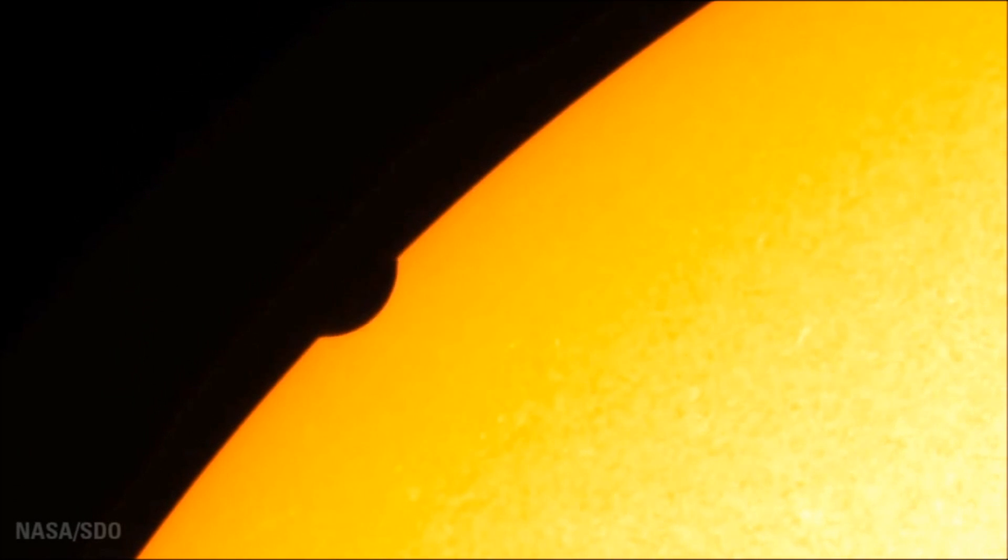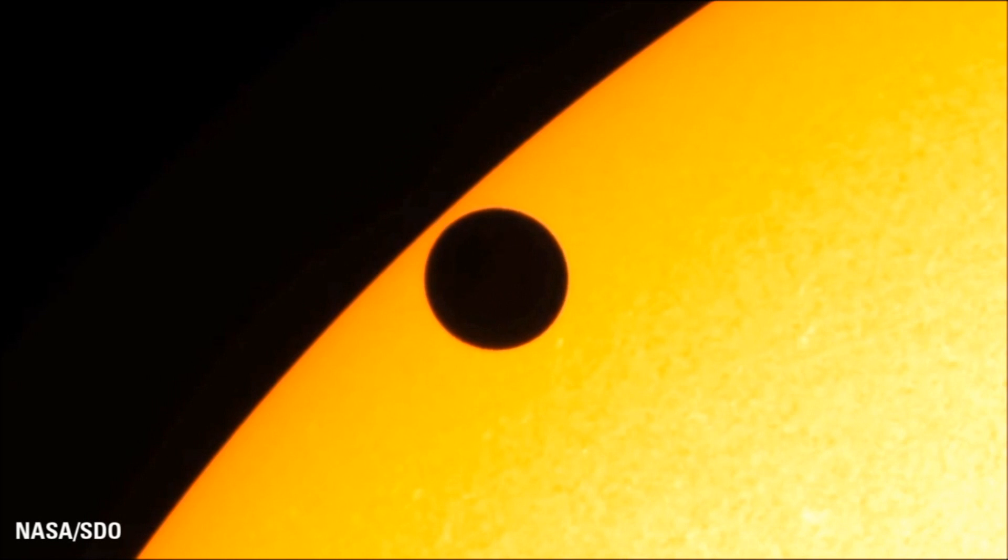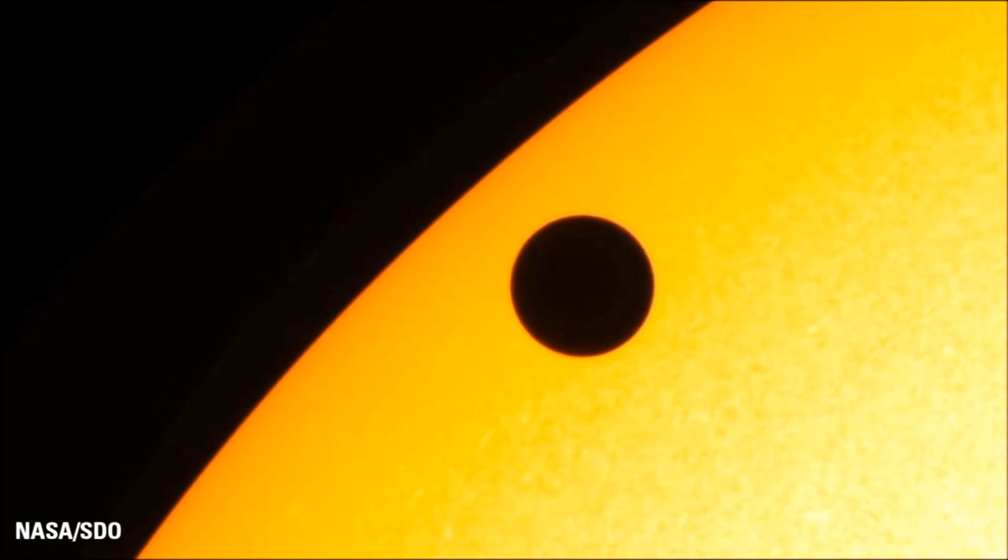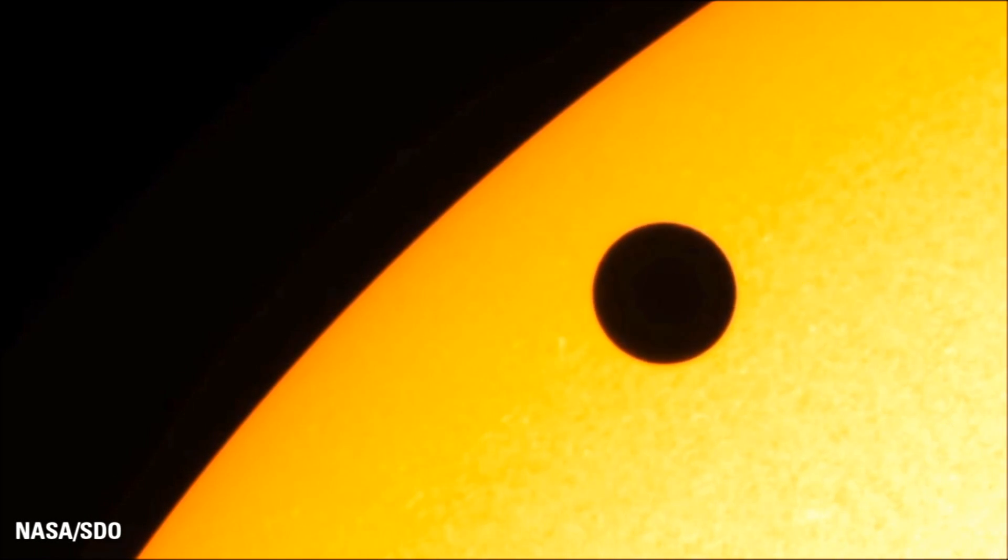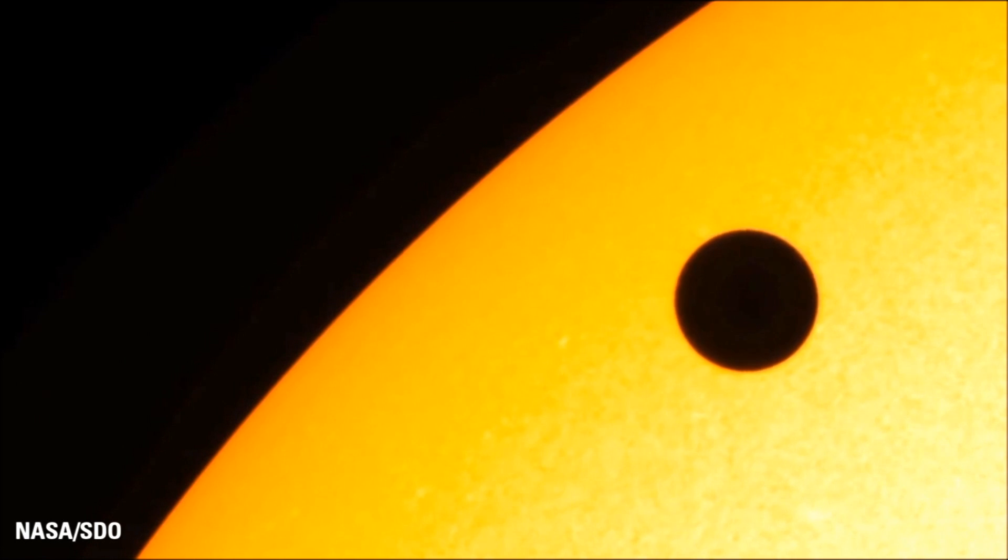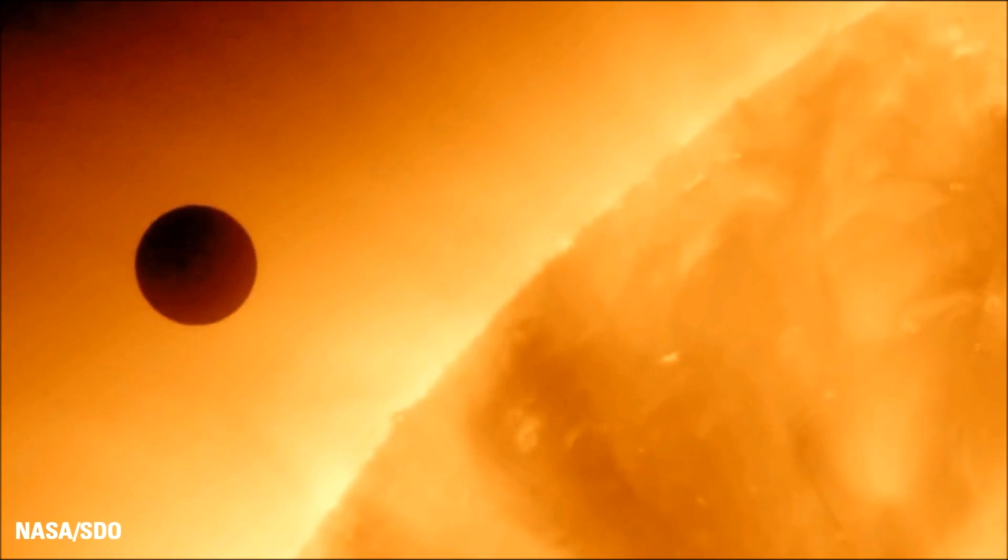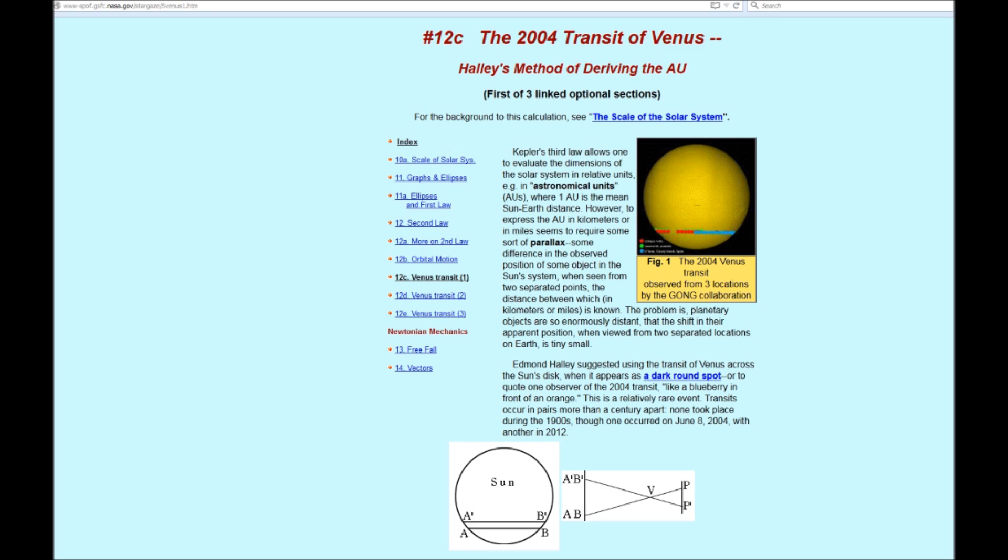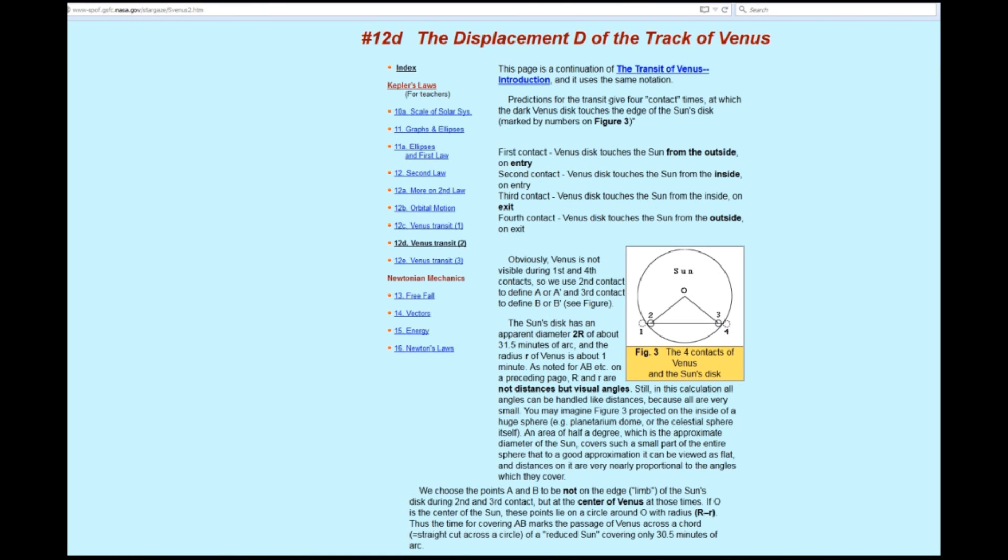So we go just to check a bit of the mathematics because this Venus transit was important. Because it came to give us, according to science, the distance between the Sun and Earth. And this is how they, the mathematics, how they got this triangulation to find the distance.